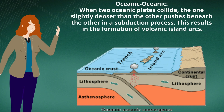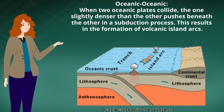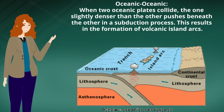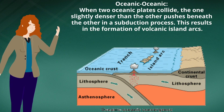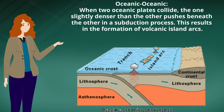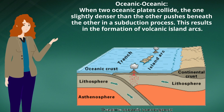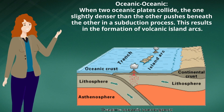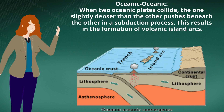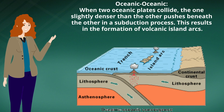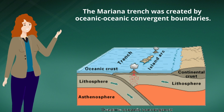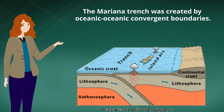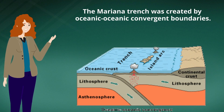When two oceanic plates collide, the one slightly denser than the other pushes beneath the other in a subduction process. This results in the formation of volcanic island arcs. The Mariana Trench was created by oceanic-oceanic convergent boundaries.